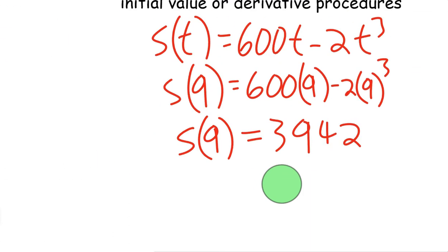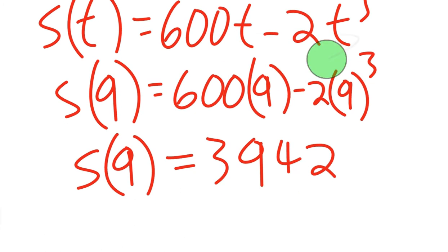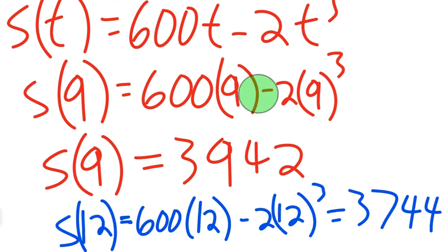Next up, we're going to figure out S(12). We're going to do a similar thing with the same equation. After 12 seconds, we plug into the original position equation and get 3,744. So from 9 to 12 seconds, the helicopter has gone down.